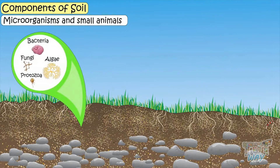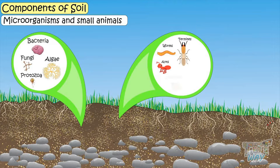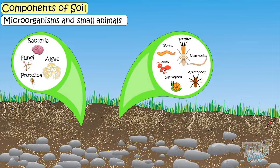Microorganisms and small animals — small living organisms like worms, ants, termites, gastropods, arthropods, and nematodes are present in the soil.